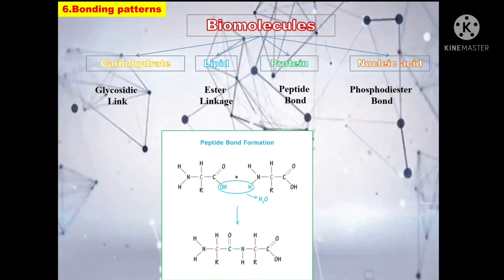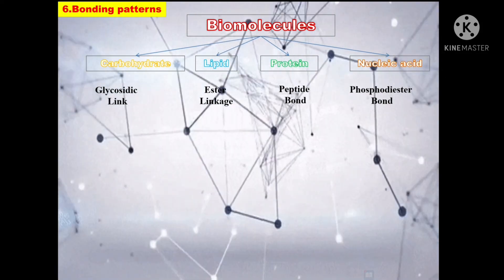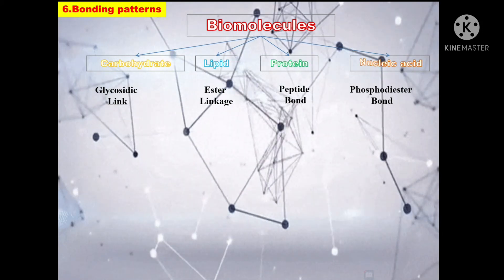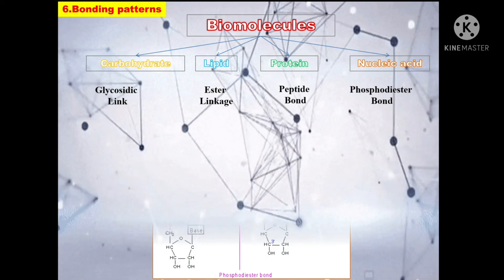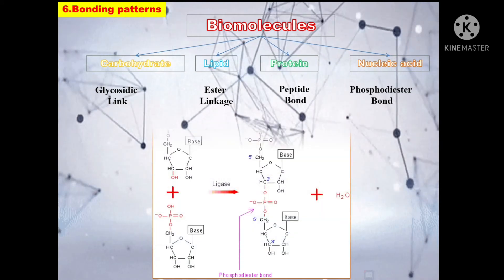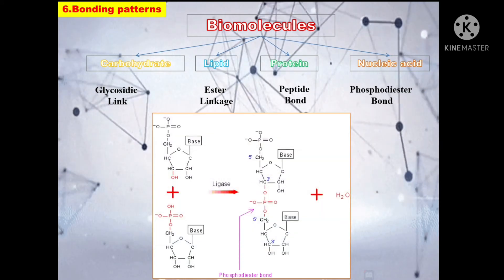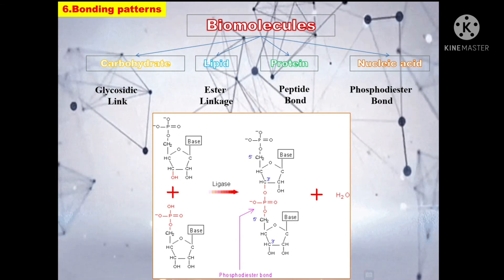Right. Next one is nucleic acid. Phosphodiester bonds are formed as the result of condensation reaction between phosphate groups and hydroxyl groups of two sugar groups. A chemical bond that forms when exactly two hydroxyl groups in phosphoric acid react with a hydroxyl group on the other molecule forms a phosphodiester bond.